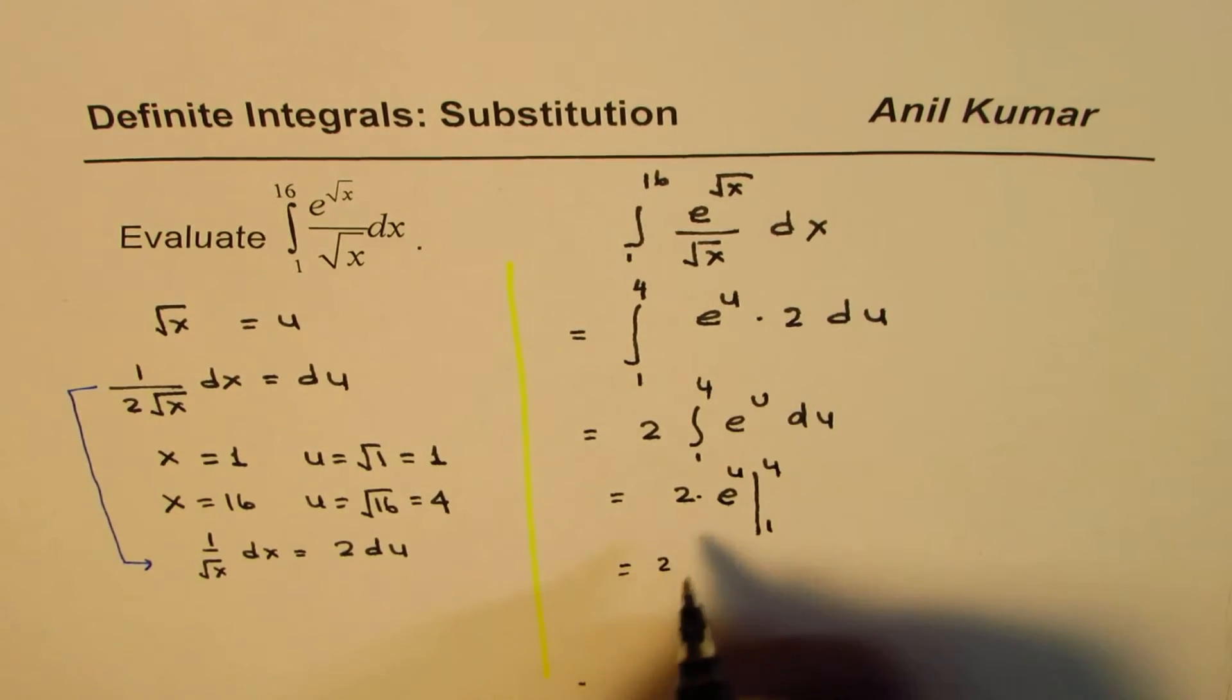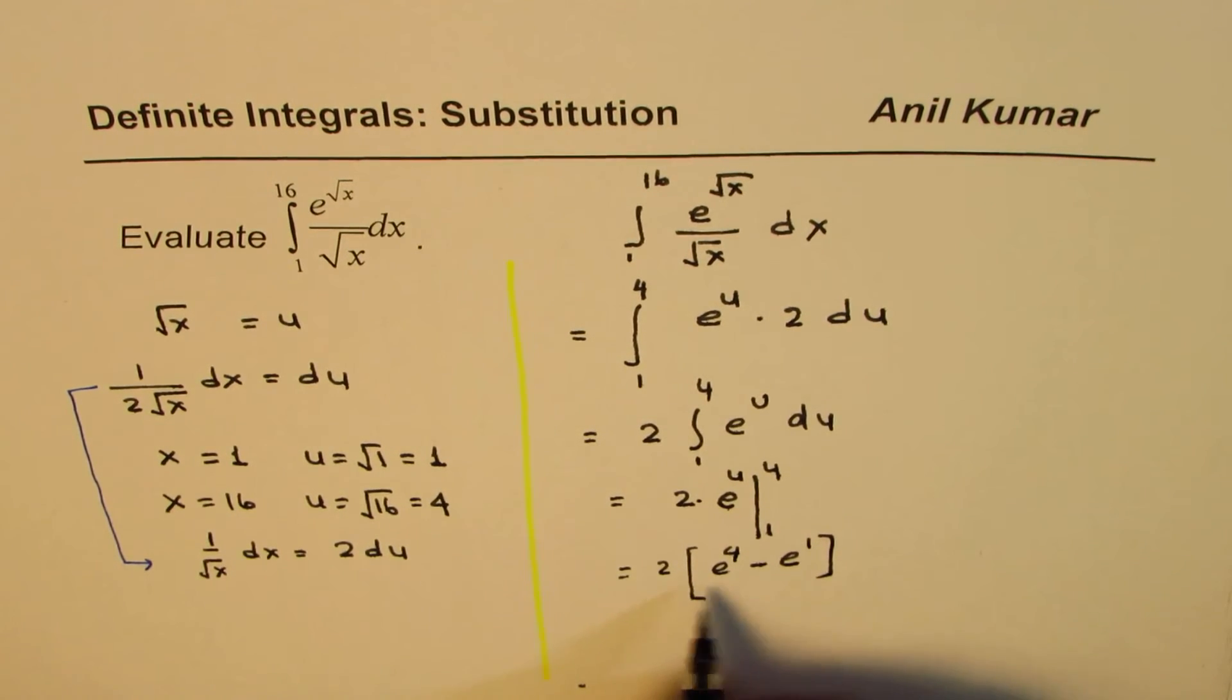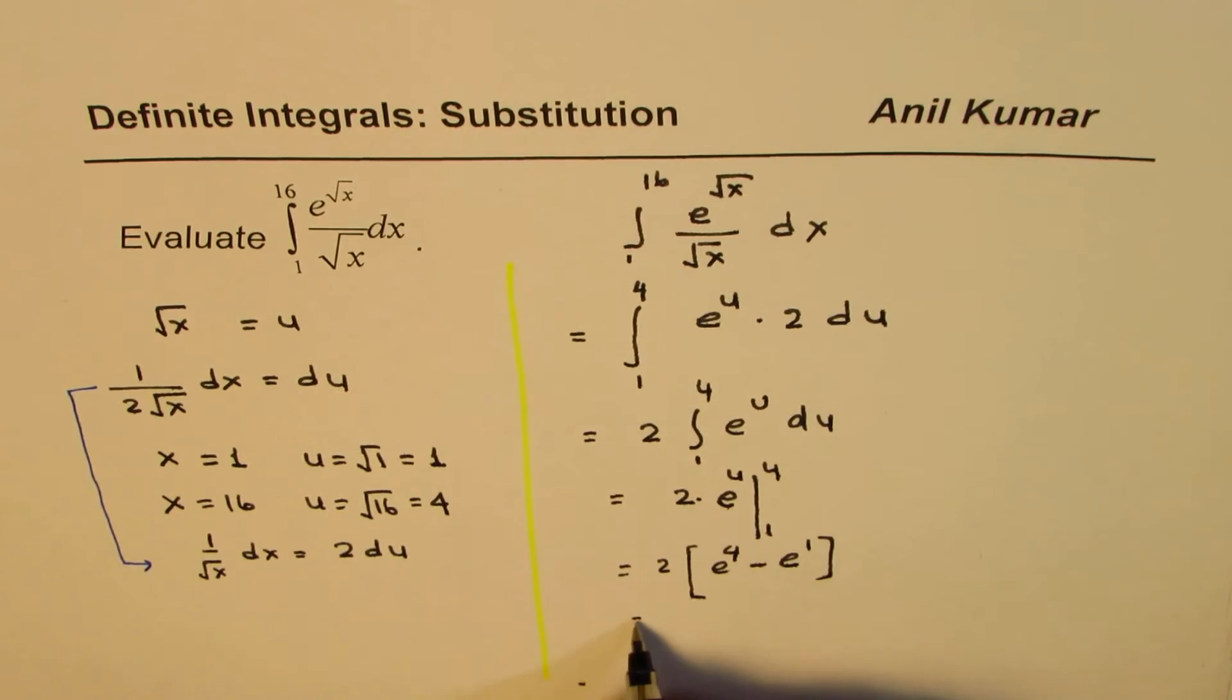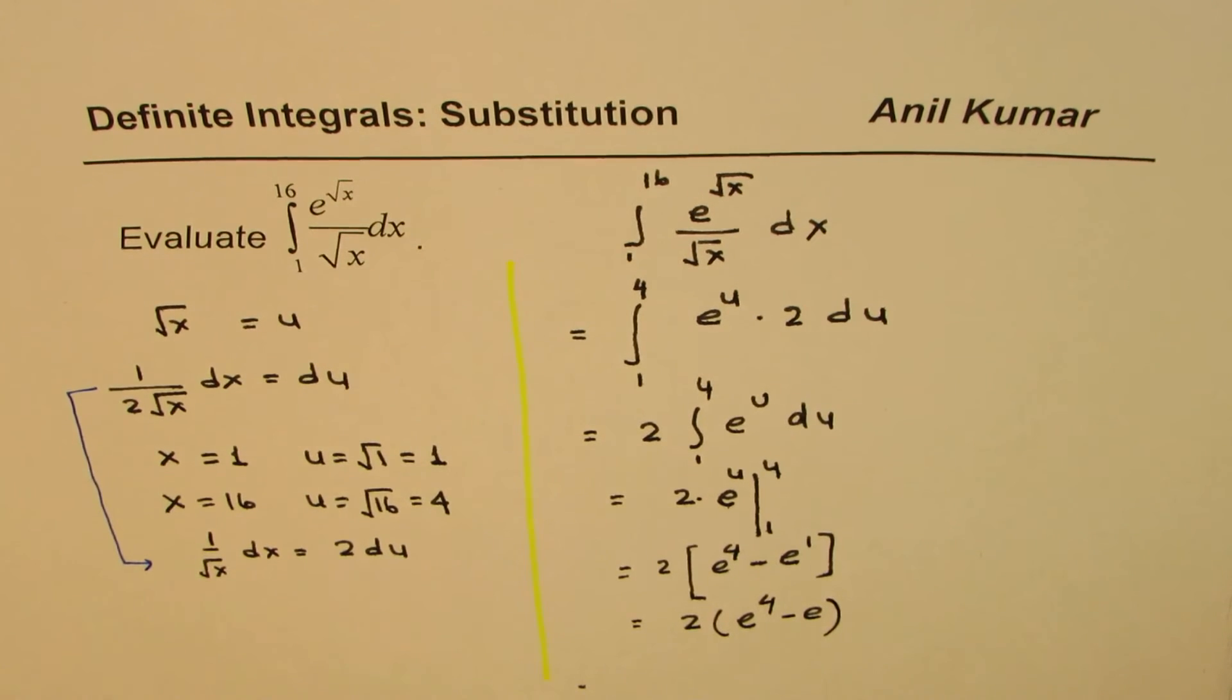And that is 2 times, let me put this in brackets, e to the power of 4 minus e to the power of 1. So that becomes our answer in this particular case. We could write this answer as 2 times e to the power of 4 minus e. So that is how we can evaluate such integrals using substitution.